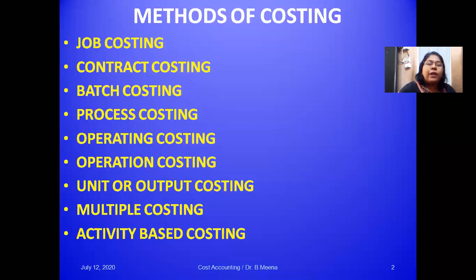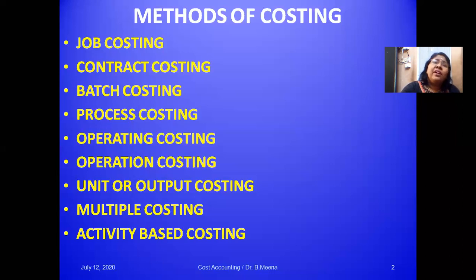Multiple costing is a system where two or more methods of costing — like job costing, unit costing, and operating costing — are applied to find the cost of production. It is the application of a combination of two or more methods to assign the cost of work done. It is applied in industries where different parts are produced separately and assembled into a final product.